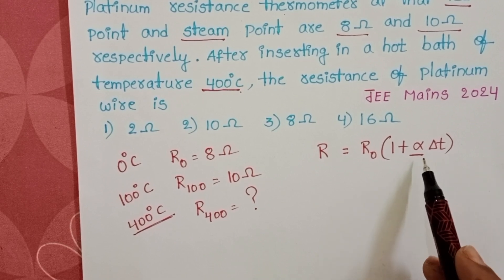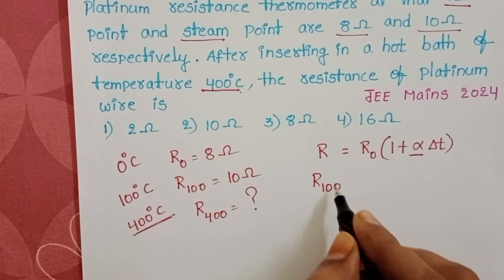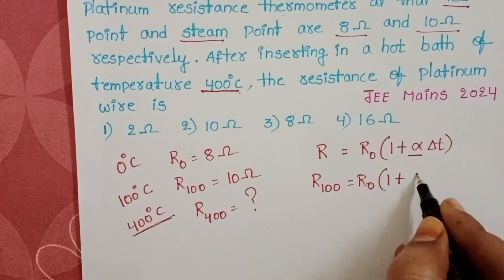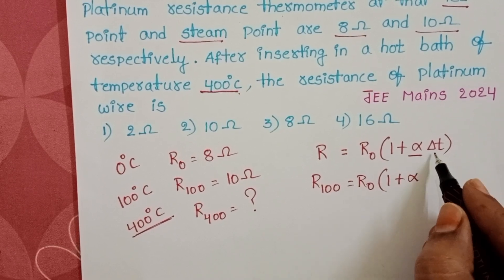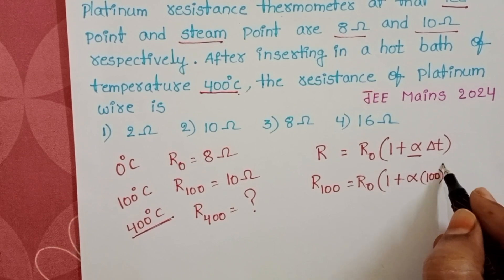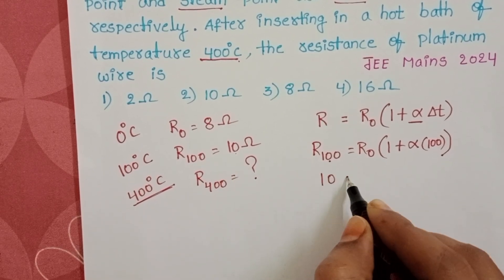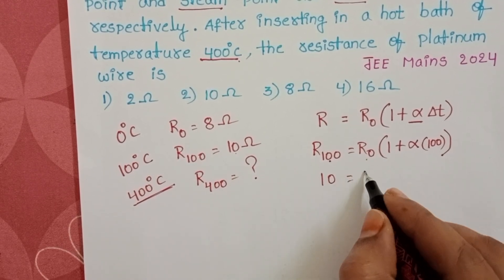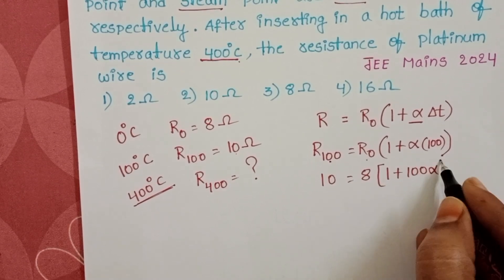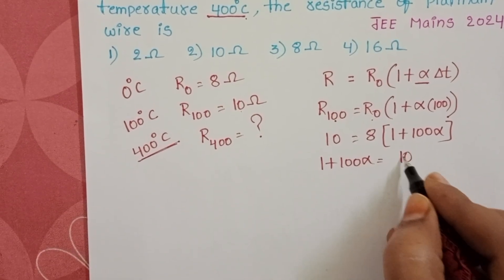So first we find the temperature coefficient alpha. At 100 degree Celsius: R₁₀₀ = R₀ × (1 + α × ΔT), where ΔT = 100 − 0 = 100. Substituting: R₁₀₀ = 10 ohm and R₀ = 8 ohm, giving 10 = 8 × (1 + 100α), so 1 + 100α = 10/8.